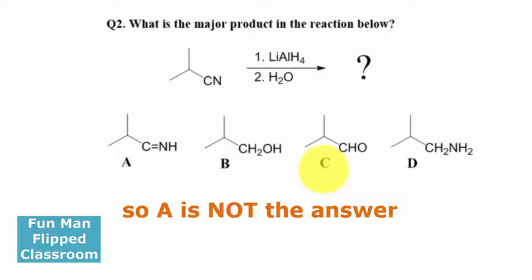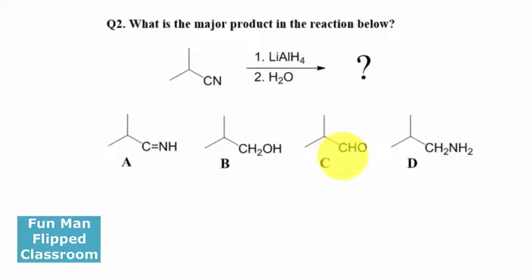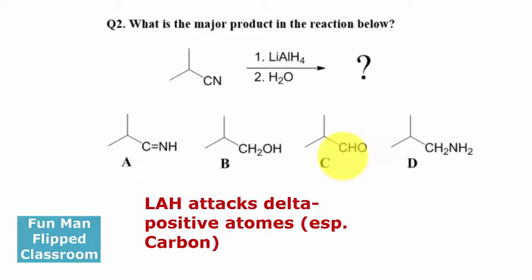Same goes for C. How can we have aldehyde after presenting us with a strong reducing agent? It would have reduced the aldehyde back into a primary alcohol.